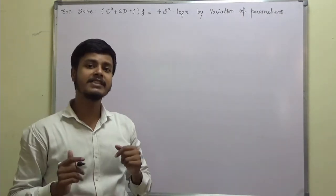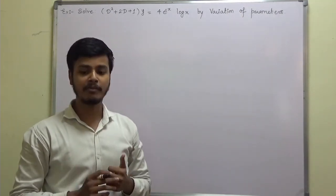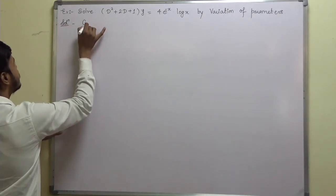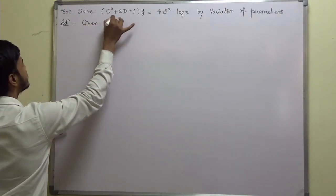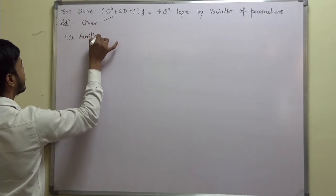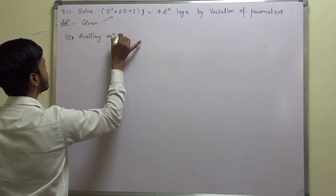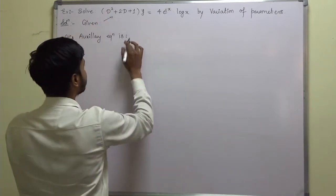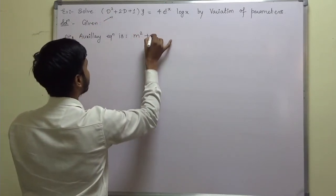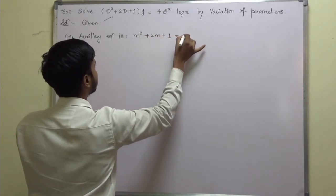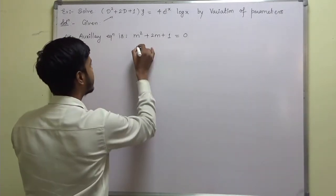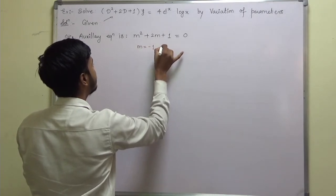So do you remember what is the first step of the working rule? Find out the complementary function. So it's always good to start with the given differential equation and then write its auxiliary equation. To write the auxiliary equation, just put D equal to m. So we get m² + 2m + 1 = 0. The roots are m = -1, -1.